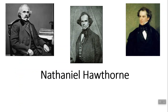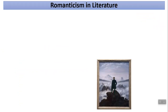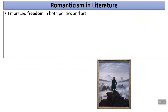I like these pictures of Nathaniel Hawthorne because we get him as an old man, a middle-aged man, and young. A lot of times we have pictures of authors just when they're old, so it's kind of nice to see him in all his different states. So, Romanticism in Literature — what does that mean?